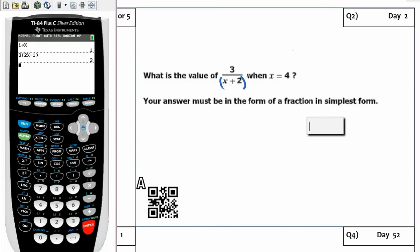So when x is equal to 4, we're going to substitute 4 in for x. So we have 3 divided by 4 plus 2, which is equal to 3 divided by 6, which is equal to 1 half.